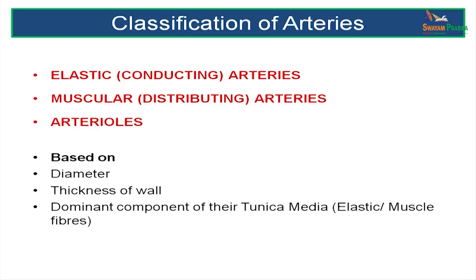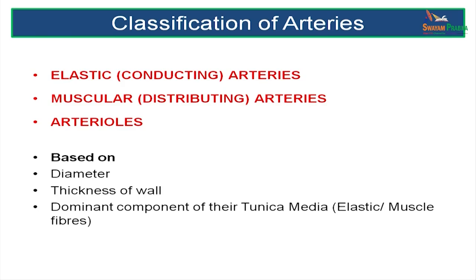How do we classify arteries? We can classify arteries based on the thickness of their wall, their diameter, or the component of elastic or muscular tissue in their media. Arteries are classified as large-size or conducting arteries, also called elastic arteries; medium-sized muscular distributing arteries; and the smaller-sized arterioles.